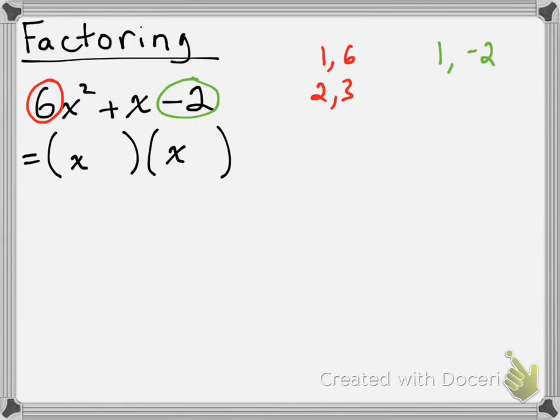From here on out, now that we have our options, we're basically just going to try them out. We'll substitute some in and see what happens. Let's take the first one. We'll use 1 and 6. So that gives us x plus 1 times 6x minus 2.